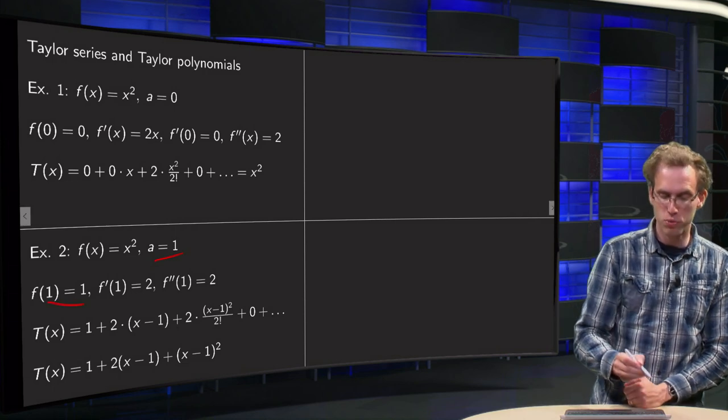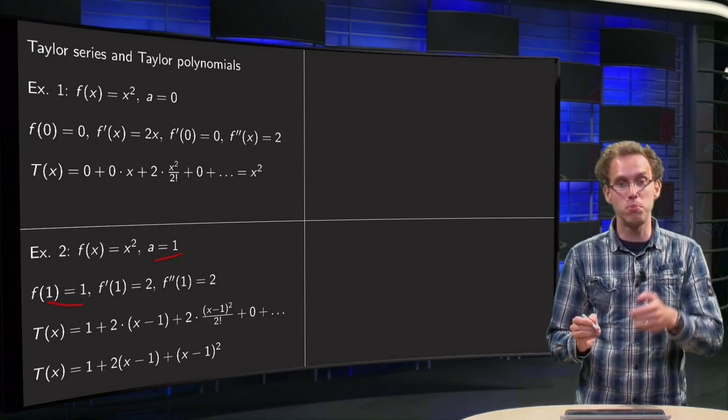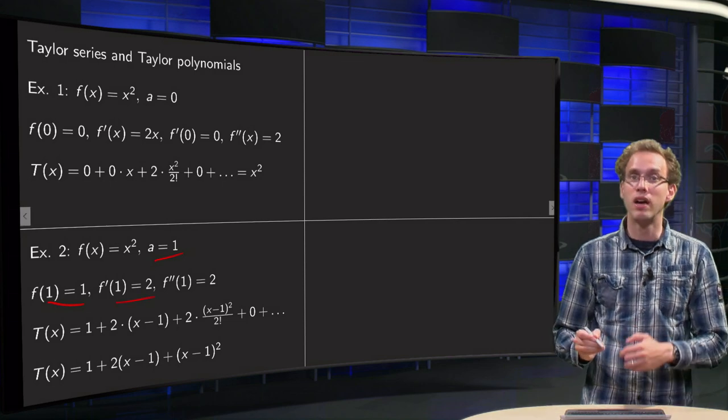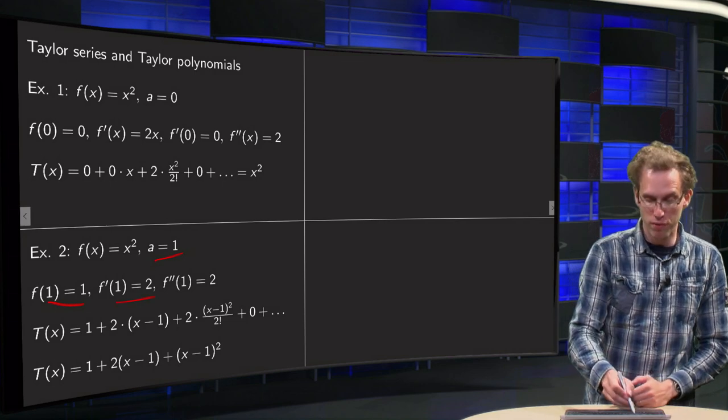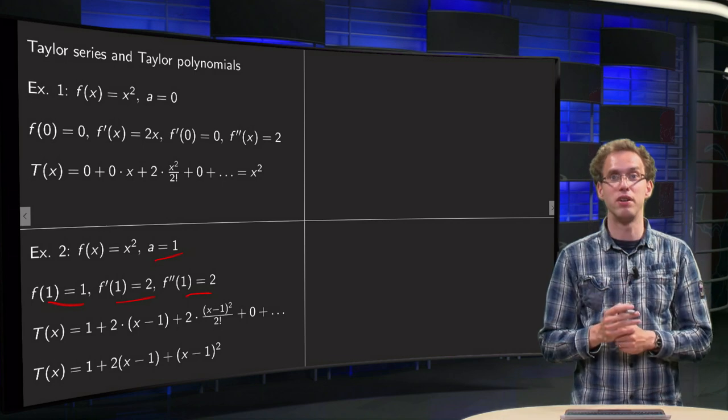Now f(1) = 1, f'(1), f'(x) = 2x, plug in 1, we get 2. f''(x) = 2 for all values of x, and all higher order derivatives are 0.